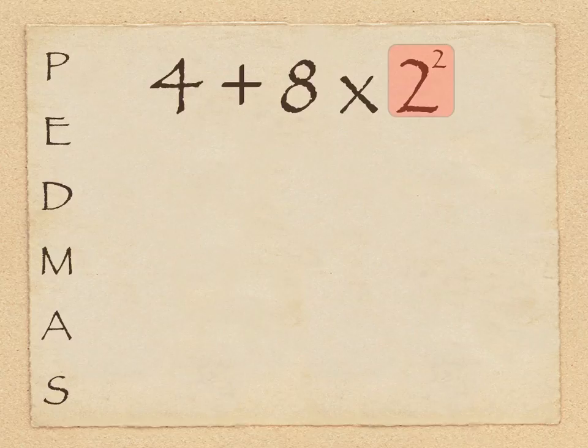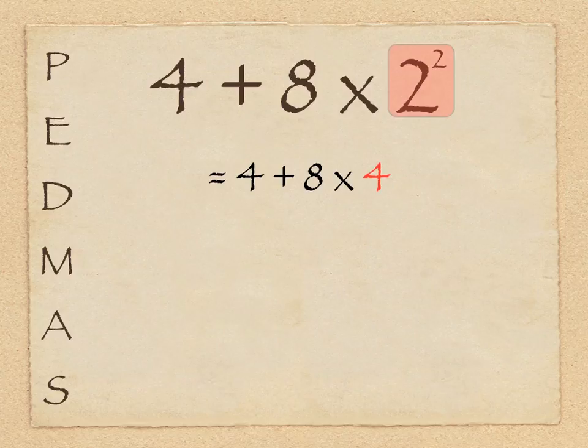And since there's no parentheses in this particular problem, we can skip down to the exponents or square roots. And I do see an exponent, there's 2 to the second power, or 2 squared, which we're going to figure out first. So we're going to rewrite the entire expression, except we're going to solve for that 2 squared. So now we have 4 plus 8 times 4.